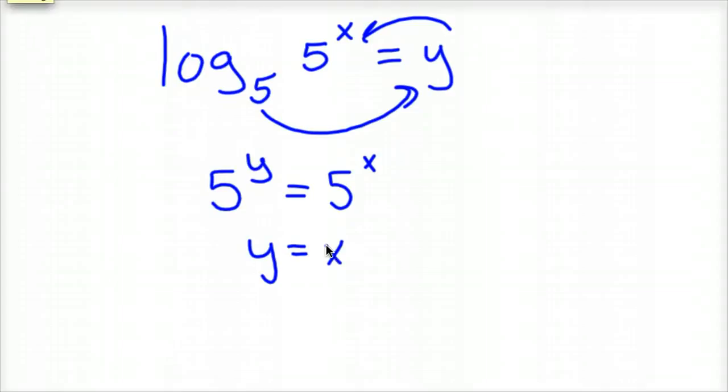So you could have, you know, dropped this stuff off and you're just left with x. So it doesn't matter necessarily how you do it. They're inverses of each other. They drop out.